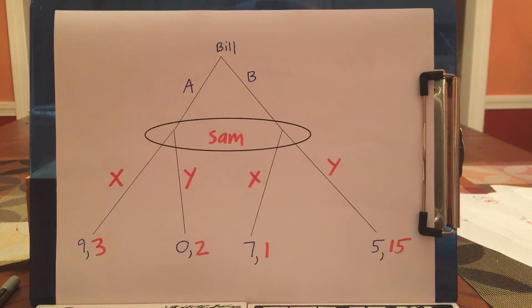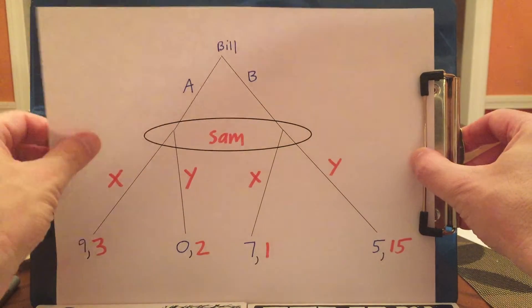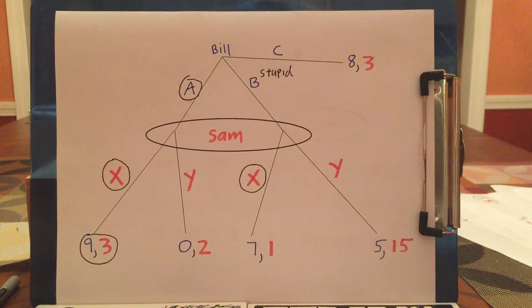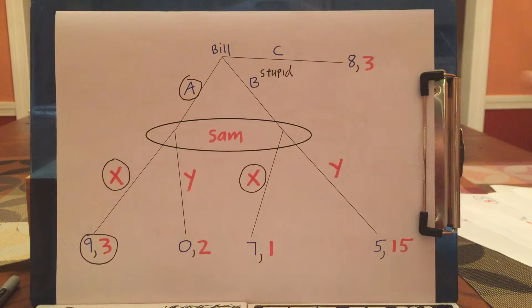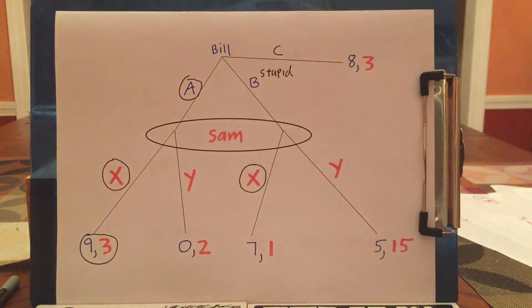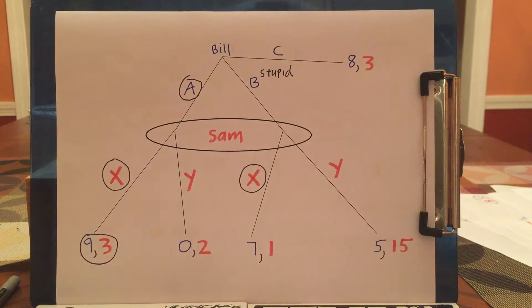I now want to make one change. I want to introduce a strategy C. The only thing different from this game and the previous game is this C. Now, if C happens, the game ends, Bill gets 8, and Sam gets 3.